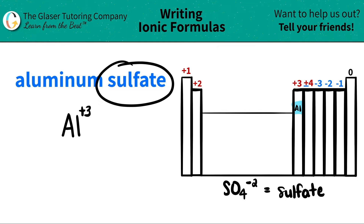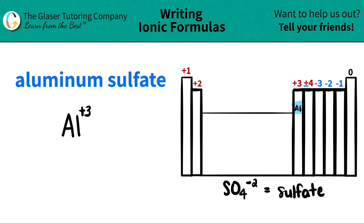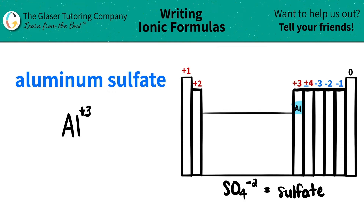Next we have sulfate, and it's an ATE. ATEs are always polyatomic ions. Polyatomic ions are never going to be on the periodic table — you have to memorize them. For the case of this video, I just put the polyatomic ion sulfate down here, but use flashcards or do whatever you got to do to memorize that sulfate is SO4 with a negative two charge.